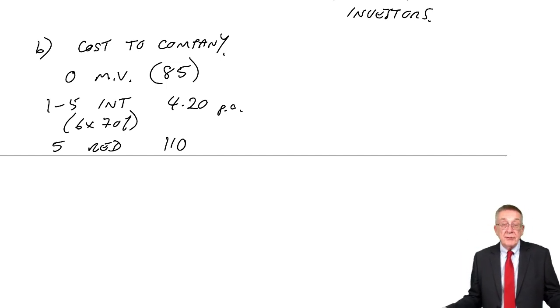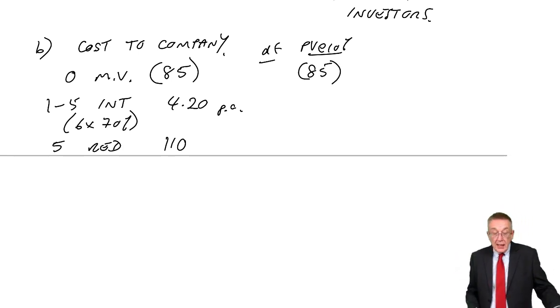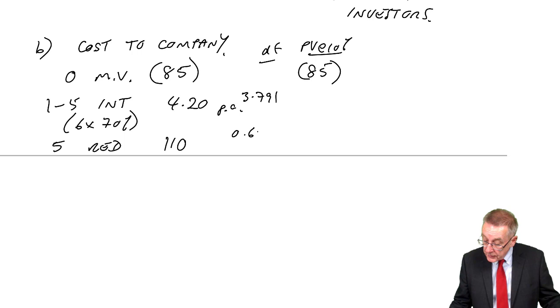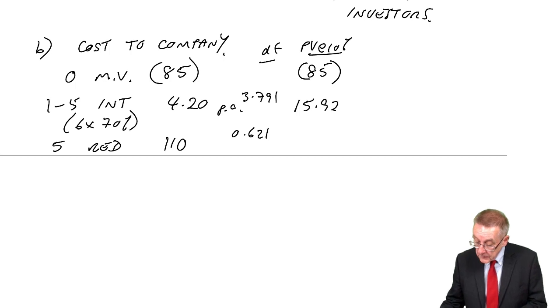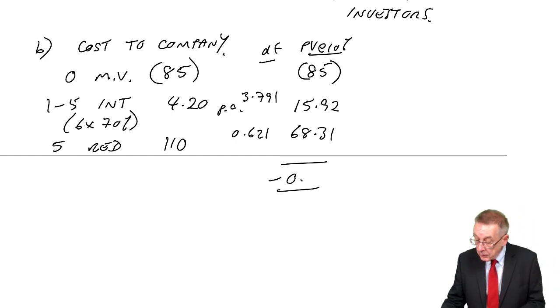So let's put it in - no quick way, we have to do it again. First of all, let me work out the present value at 10%. 85 is 85. The five-year annuity factor at 10% is 3.791. The ordinary present value factor, five years at 10%, is 0.621. So the present values: 15.92, 68.31. So a net present value of minus 0.77.